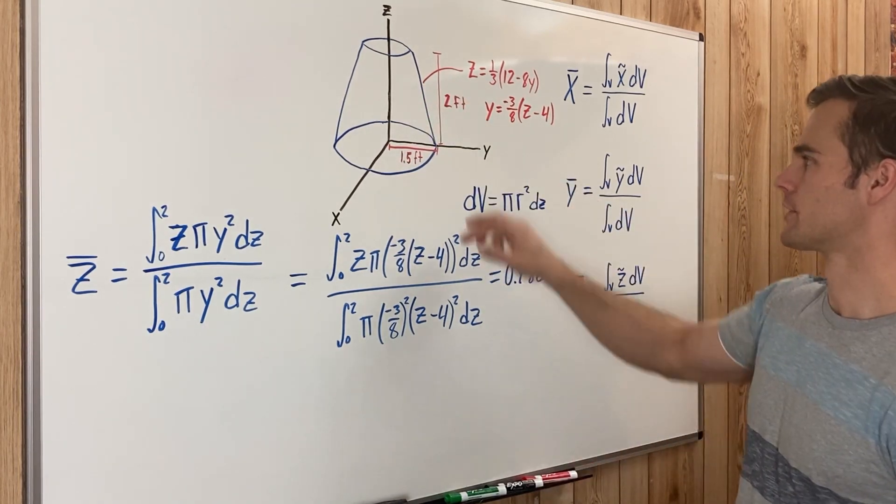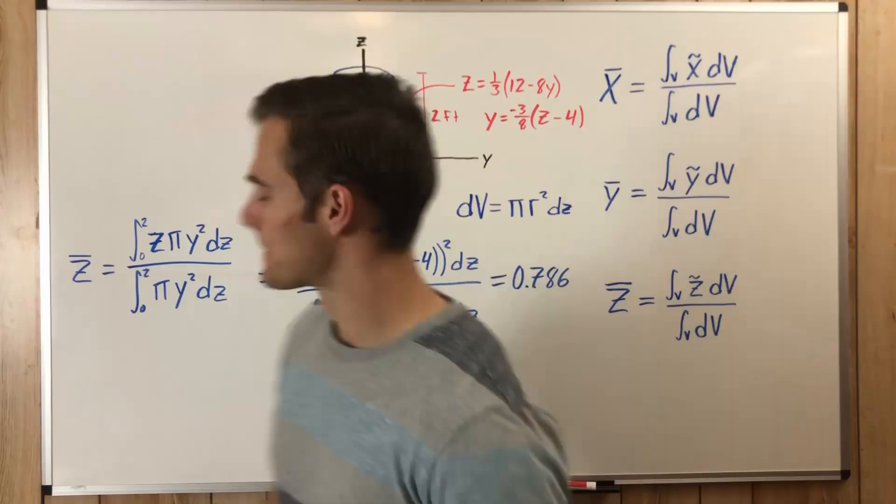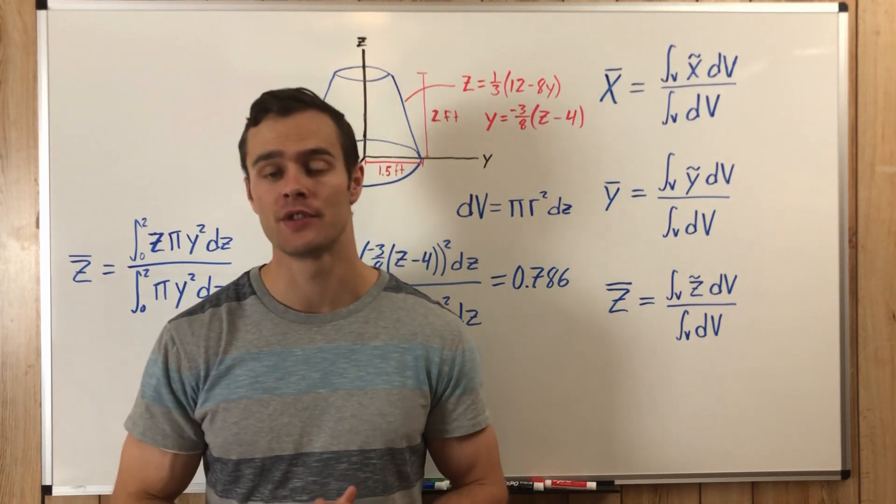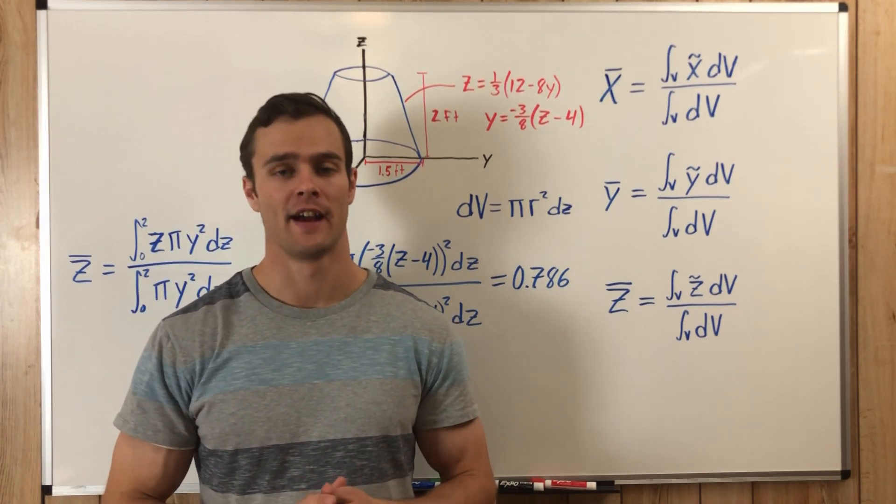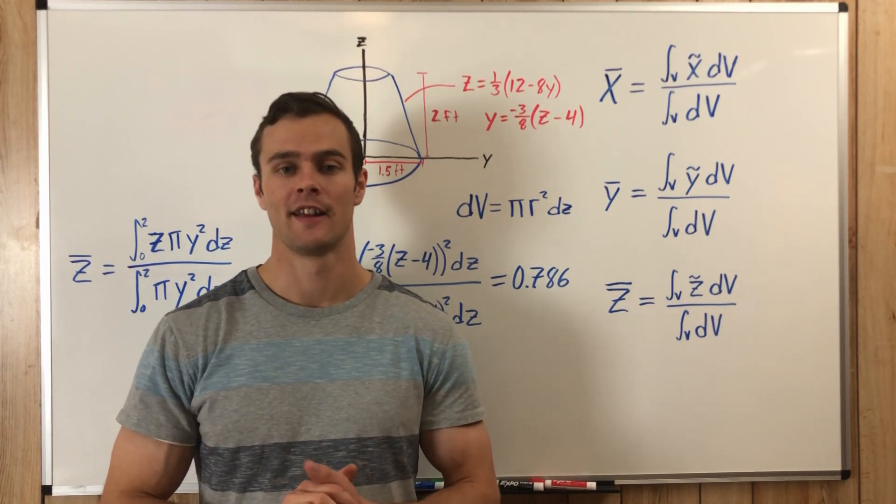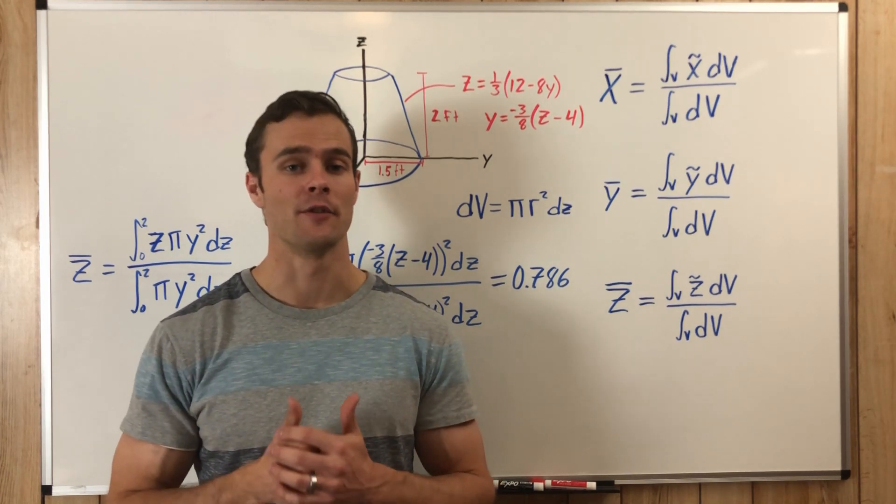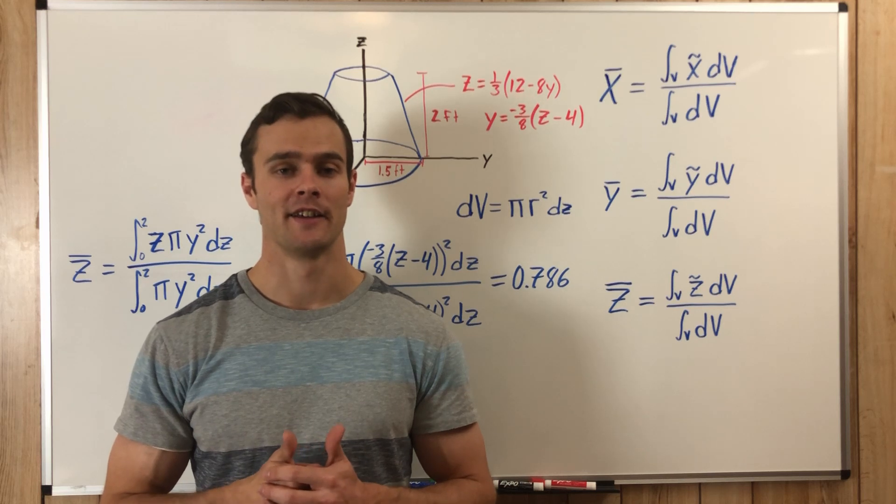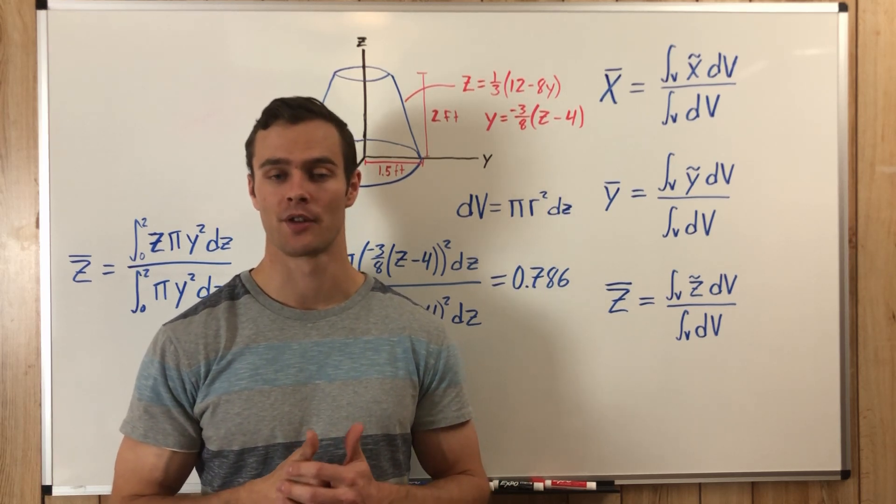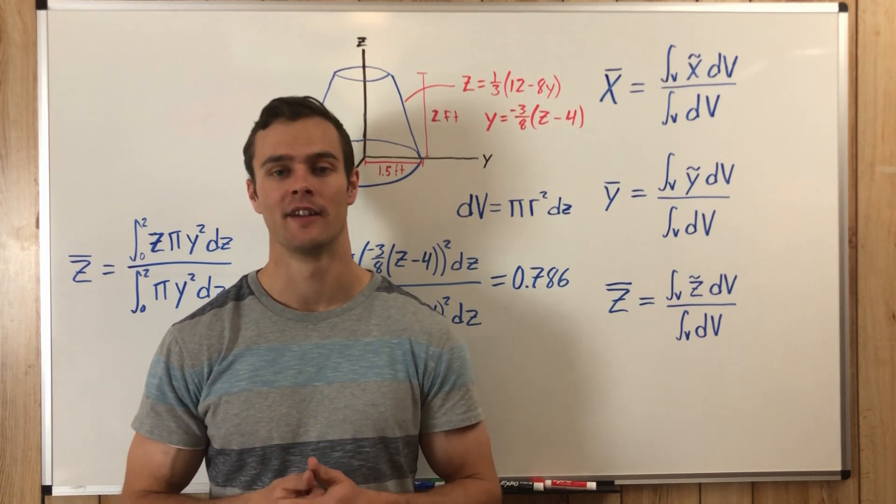So there's a pretty simple example of how to find the centroid of a volume using the disk method, and once again the steps are written out down in the description. You can check that out. If you have any questions or suggestions, leave them down in the comments and I will reply to them. If you found this video helpful, hit that like button. And if you're new to this channel, my name is Preston Palmer, student engineering. My goal is to help other engineering students like me better understand engineering. So if you found this video helpful, hit that like button and please subscribe.